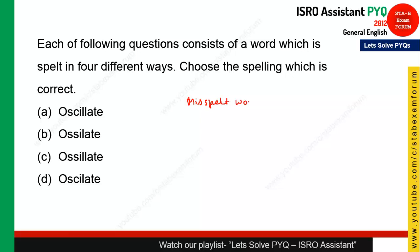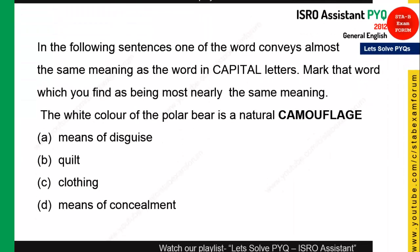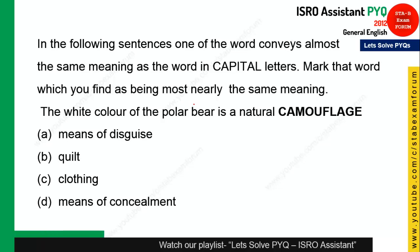This question is from misspelled words, where you need to identify the correct spelling. The word in question is 'oscillates'. You can eliminate options with double 's' since that is incorrect. Among the remaining options, 'oscillate' with double 'l' is the correct spelling. Option A is the right answer — you need to practice a lot for this type of question.